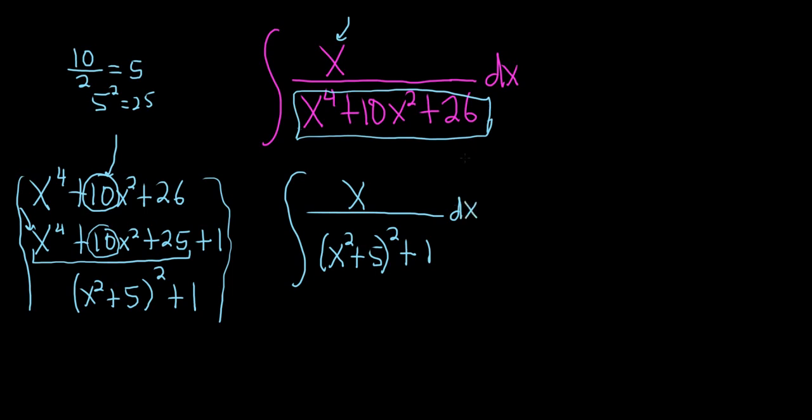And so now there is a formula, which should be hopefully in the back of your mind. It's if you have 1 over a squared plus x squared dx, this is equal to 1 over a arc tangent of x over a and then plus a capital C. So this formula should be applied to what we have here.